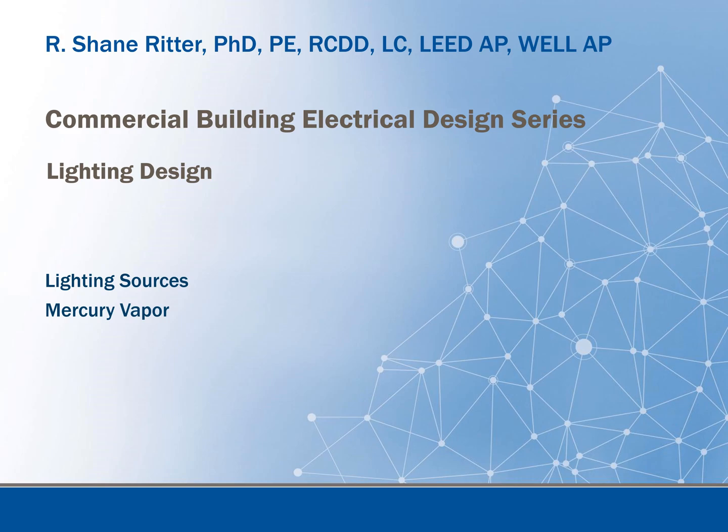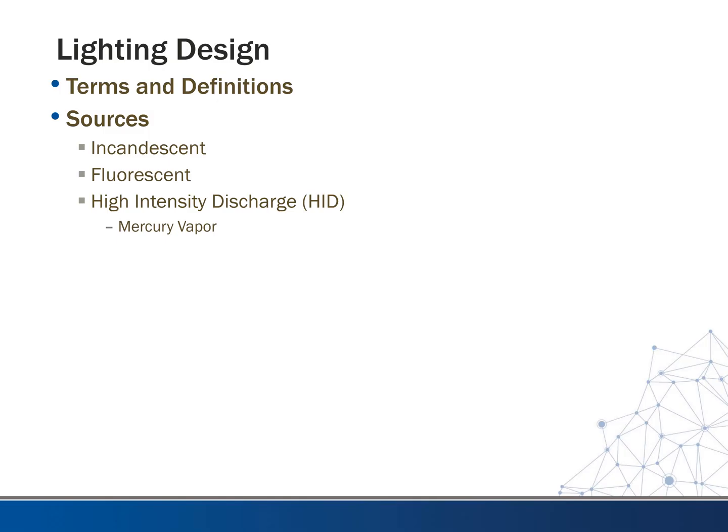This video is part of the Commercial Building Electrical Design Series. We're continuing our discussions on lighting design and looking at different lighting sources. This video will begin our look at what we call HID lighting, or high-intensity discharge. Taking a quick inventory of where we are, we've gone through lighting terms and definitions, and we're walking through the sources. So here we're in high-intensity discharge — mercury vapor.